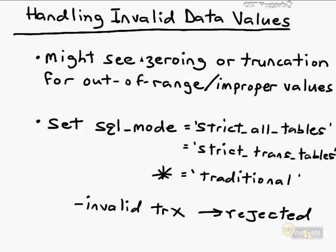Handling Invalid Data Values in MySQL. We're concerned with maximizing data integrity in our tables — making sure that data entry operators are prevented from incompletely adding row data to our base tables. By default, MySQL runs in a fairly permissive mode, so you may see zeroing out or truncation for out-of-range or improper values. That's just how MySQL has been designed — it's forgiving in its data handling.